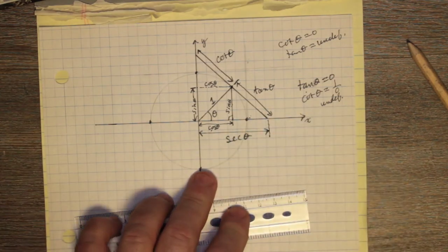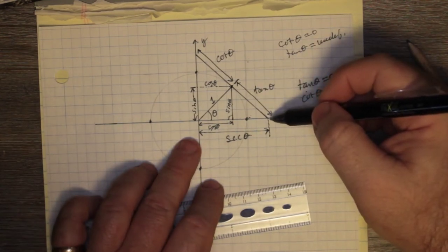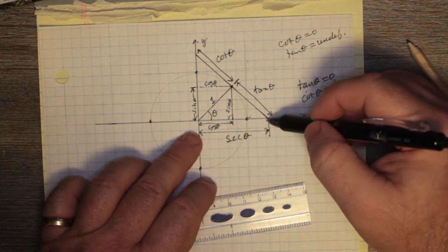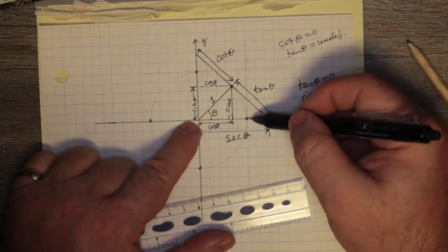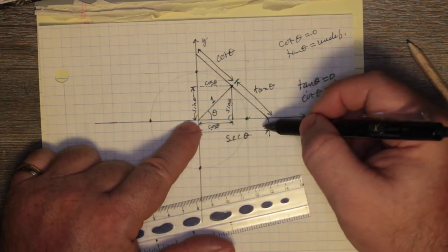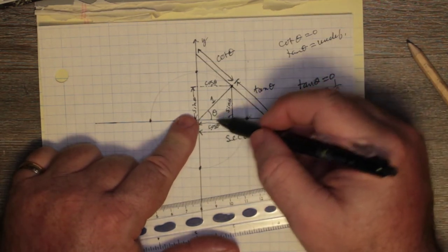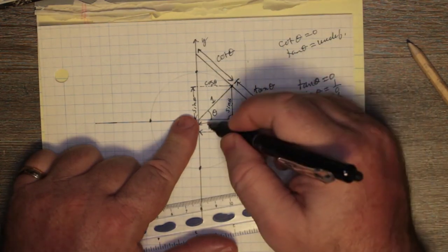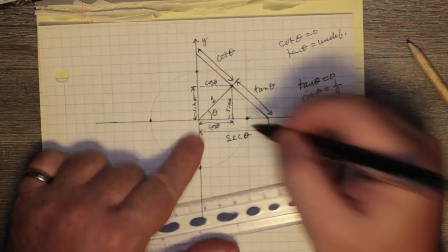The tangent line will never go inside the unit circle, so the distance for secant theta will never get shorter than one. The minimum value secant can return is one. Conversely, cosine will never exceed the unit circle — its maximum value is one, and the minimum value secant can return is also one.